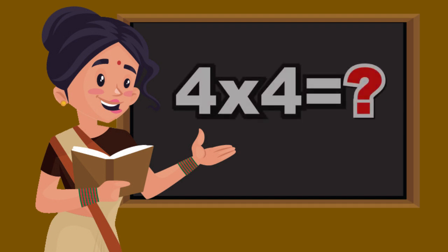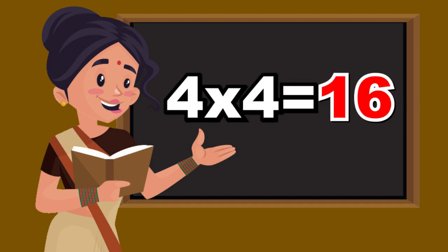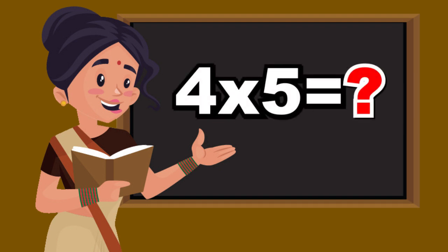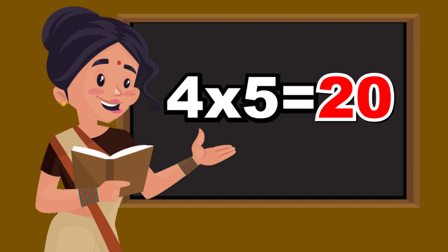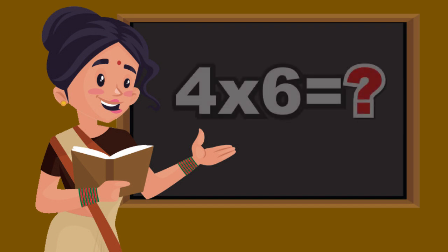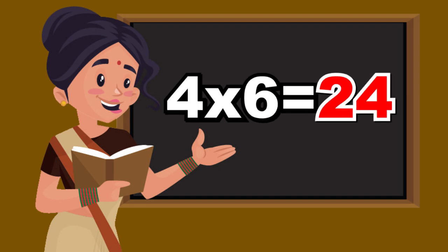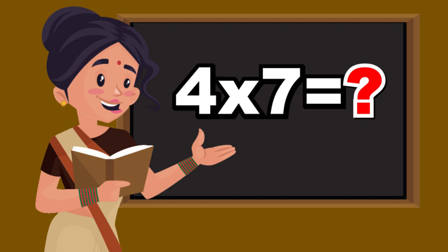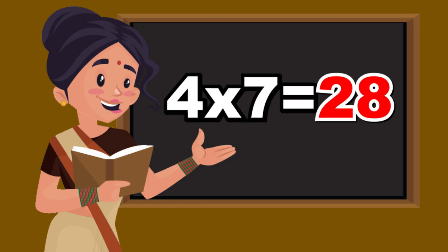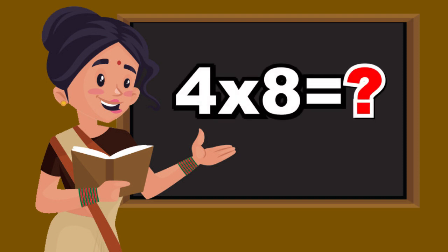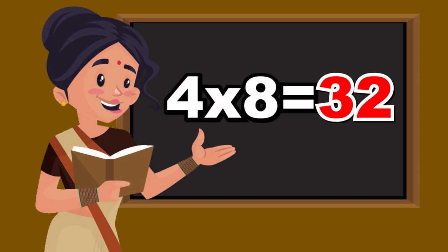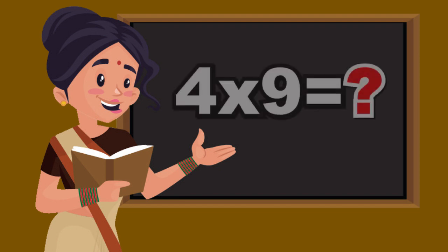Four fours are sixteen. Four fives are twenty. Four sixes are twenty-four. Four sevens are twenty-eight. Four eights are thirty-two. Four nines are thirty-six.